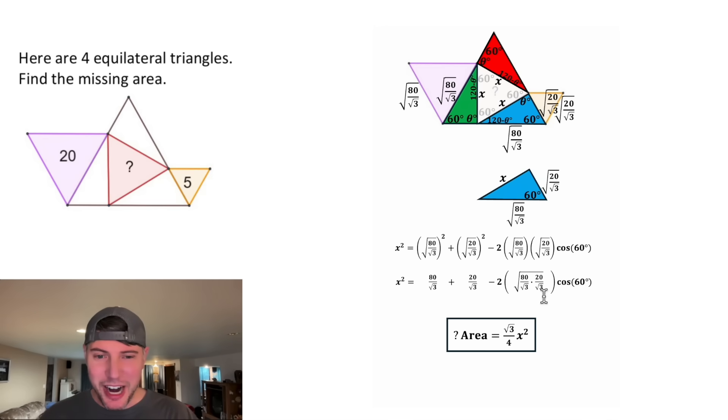On the top of the fraction, 80 times 20 is 1600. On bottom, the square root of 3 times square root of 3 is equal to square root of 9, which is 3. And now for the square root of this whole fraction, we can put a square root on top and bottom. On top, the square root of 1600 is 40. We can just leave the bottom alone. And then 2 times 40 is equal to 80.